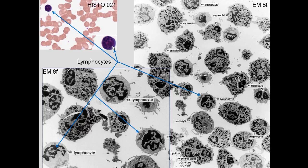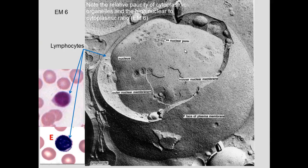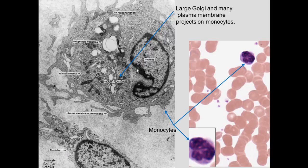Lymphocytes are visible in blood — mostly nucleus with a little cytoplasm. Electron micrographs show the nucleus appears round but has indentations. Lymphocytes primarily contain ribosomes, a little mitochondria, and some pseudopodia. The nucleus nearly fills the cell with a high nucleus-to-cytoplasm ratio, as this is a relatively quiet cell ready to respond — especially if it is a B lymphocyte.